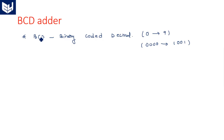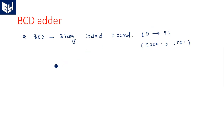Here we are going to discuss an adder which performs addition between two BCD numbers. When we are performing the addition between two BCD numbers, the result may be greater than 9. For example, if you take 9 and 9, when you perform the addition between 9 and 9 the result is 18, which is not within the BCD range. So we have to do some adjustment to bring the result back to a BCD number.